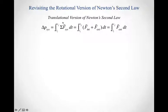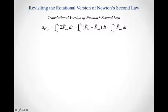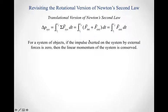We can think about the net force acting on a system and break it up into the sum of internal forces plus the sum of external forces. When thinking about a system, all we care about is the net external force. If the external impulse acting on the system is zero, then the linear momentum of the system is conserved.